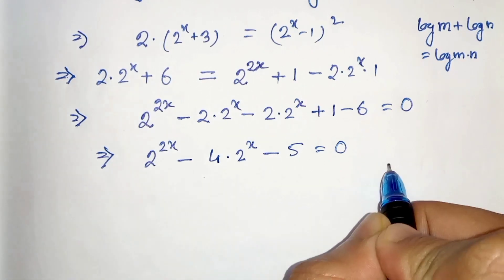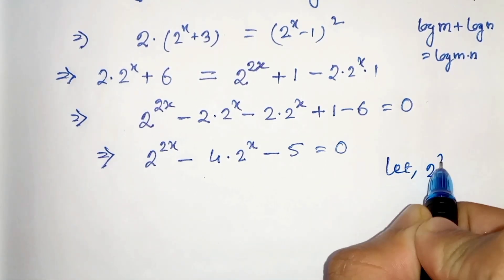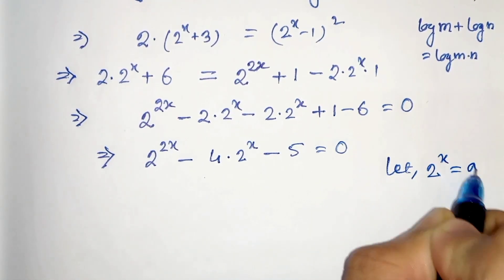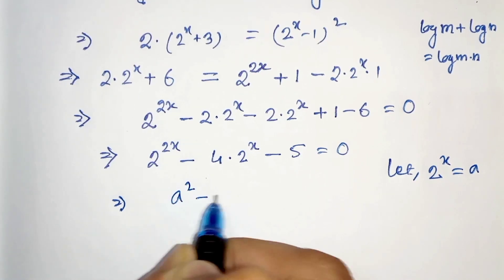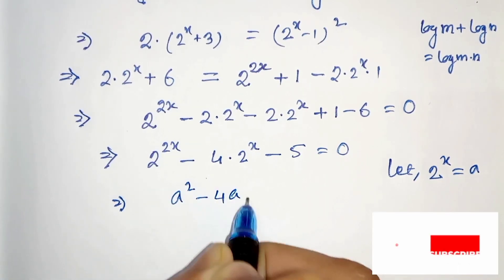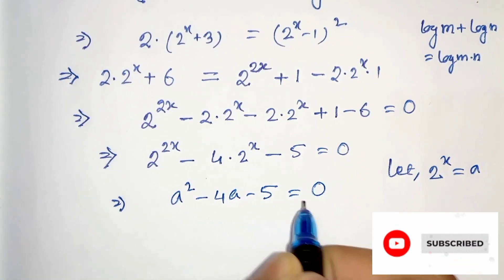Now let's take 2 to the power x as a. So it will be a squared minus 4a minus 5 equals to 0.